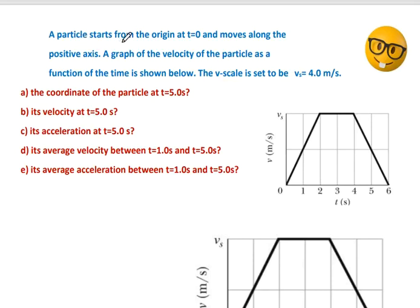A particle starts from the origin at time equals zero and moves along the positive axis. A graph of the velocity of the particle as a function of time is shown in blue. The v-scale is set to v equals 4.0 meters per second. What is the coordinate of the particle at time equals 5 seconds?